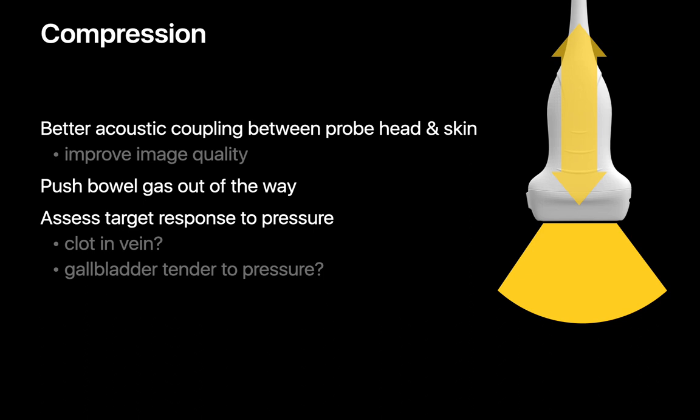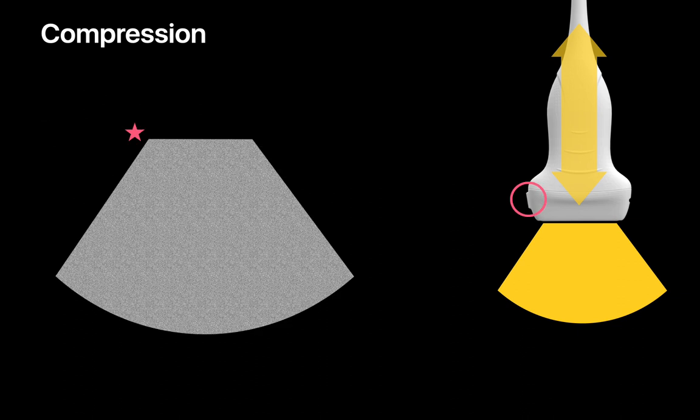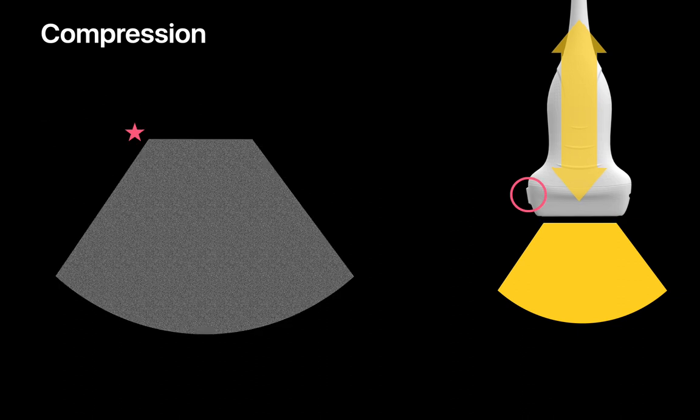Compression is a useful maneuver that helps get us better ultrasound images and can sometimes directly help us diagnose things like DVTs and acute cholecystitis. Image quality can suffer when we're not holding an ultrasound probe firmly against the skin since some of the ultrasound waves that help create our image don't make it into the patient's body.